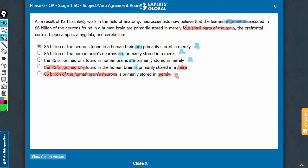Let's confirm answer choice D. As a result of someone's work, neuroscientists now believe that the learned information encoded in the 86 billion neurons found in the human brain is - 'is' referring to information correctly. Information is primarily stored in a mere four small parts of the brain, and then the four parts are talked about. Makes perfect sense. D is the correct answer choice.